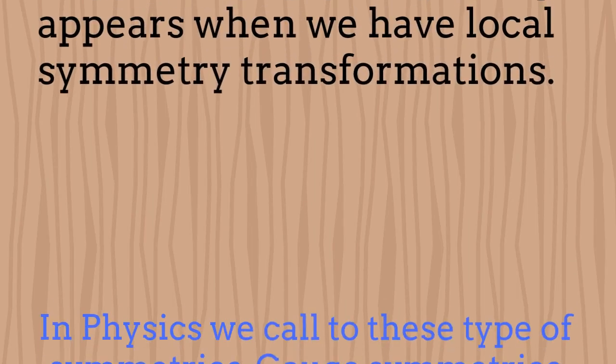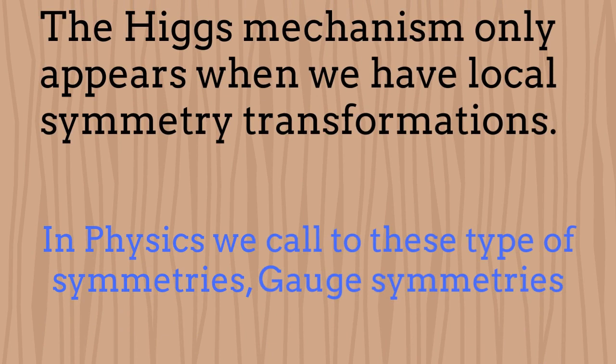It turns out that in physics, the Higgs Mechanism only appears when local symmetry transformations are involved. We call this type of symmetries gauge symmetries.